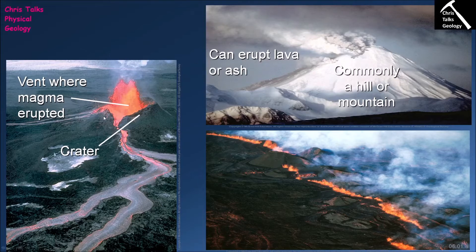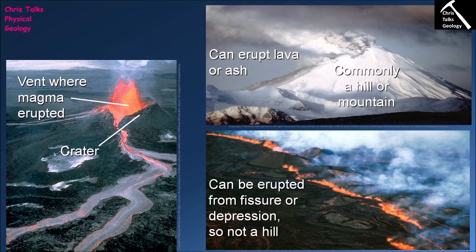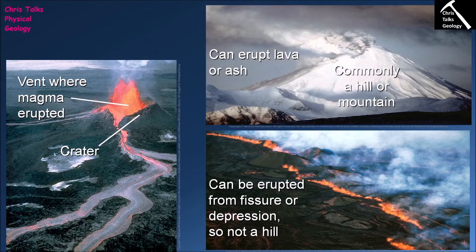The model so far describes a single-point vent, but there is also a second type: fissure eruptions. Instead of one centralized location, the magma exits through a fissure — a crack on the surface of the earth. Because the material is extruded over a large area, the result is a flat, broad volcano, in contrast to a single central vent where material piles up to form a hill or mountain.